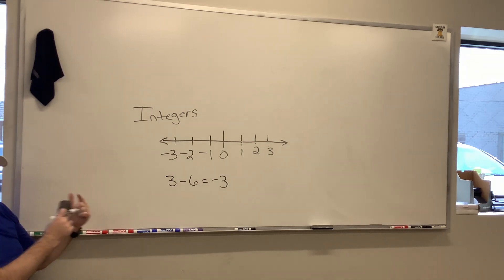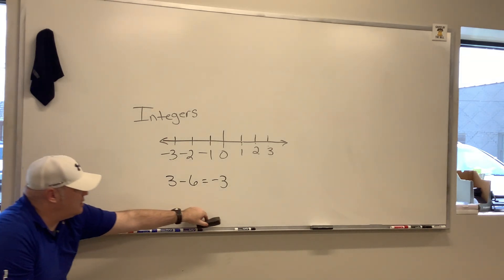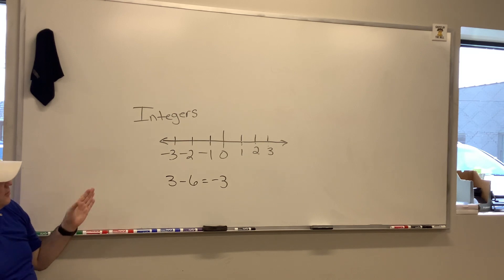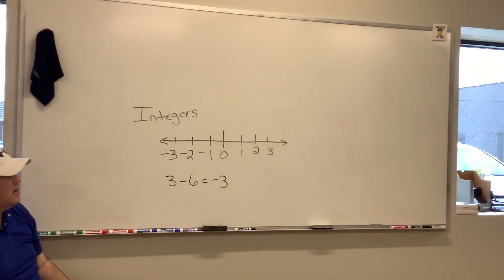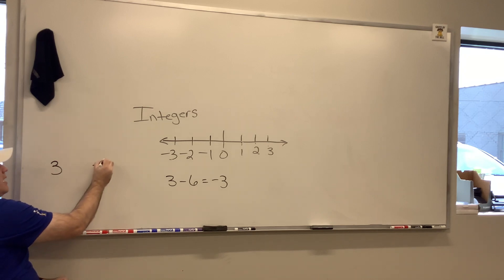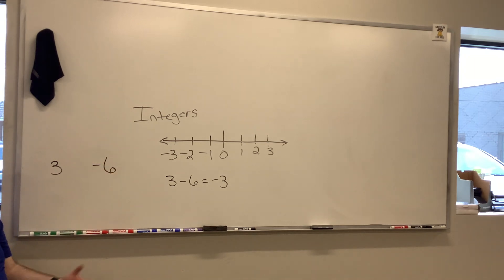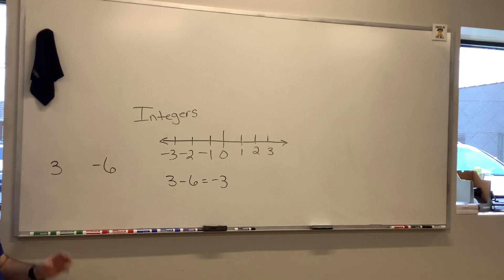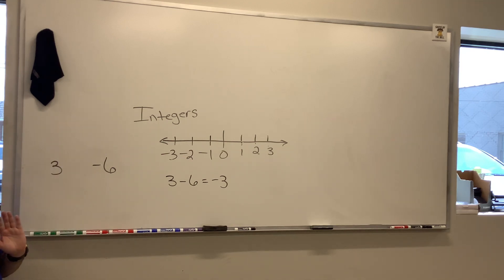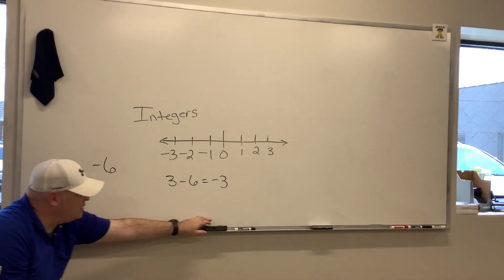Going back to the original example: we've got positive 3 and we're taking away 6. But we can also look at this as a positive 3 and a negative 6 being put together. There's more of the negative than the positive, so we end up on the negative side. Those symbols matter — we can separate them and identify it as a positive 3 and a negative 6, and that's going to come into play when we do problems beyond the number line.